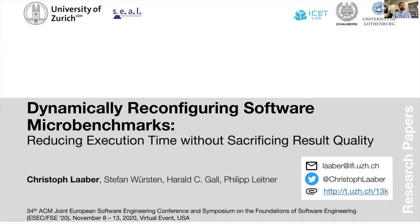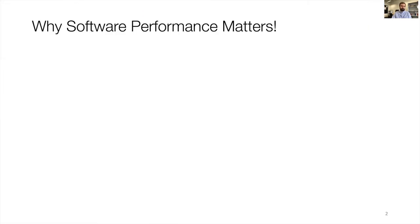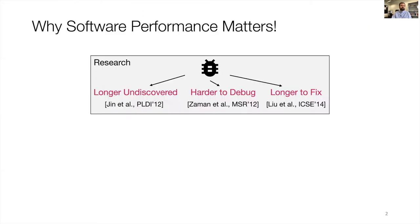Before I dive into the contents of the paper, I want to motivate why software performance matters. Research on software performance problems — software performance bugs — has shown that compared to their functional counterparts, they go longer undiscovered, and once they are found, they are harder to debug, harder to reproduce, and take longer to fix.